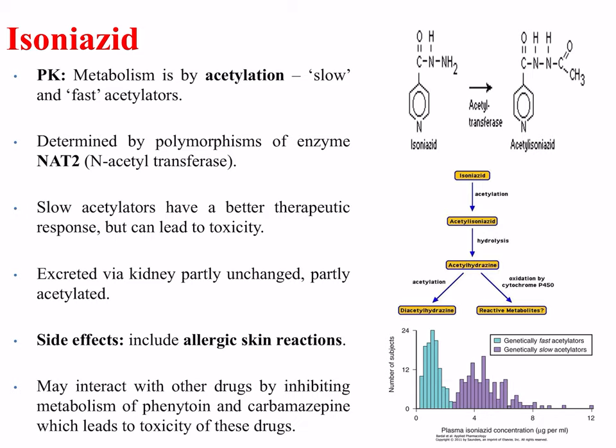Metabolism of isoniazid is by acetylation, with slow and fast acetylators in the general population. This is determined by polymorphisms of the enzyme NAT2, standing for N-acetyltransferase. Slow acetylators have a better therapeutic response but can lead to toxicity. Isoniazid is excreted via the kidney, partly unchanged and partly acetylated. Side effects include allergic skin reactions. Isoniazid may interact with other drugs by inhibiting their metabolism, such as phenytoin and carbamazepine, which leads to toxicity of those drugs.